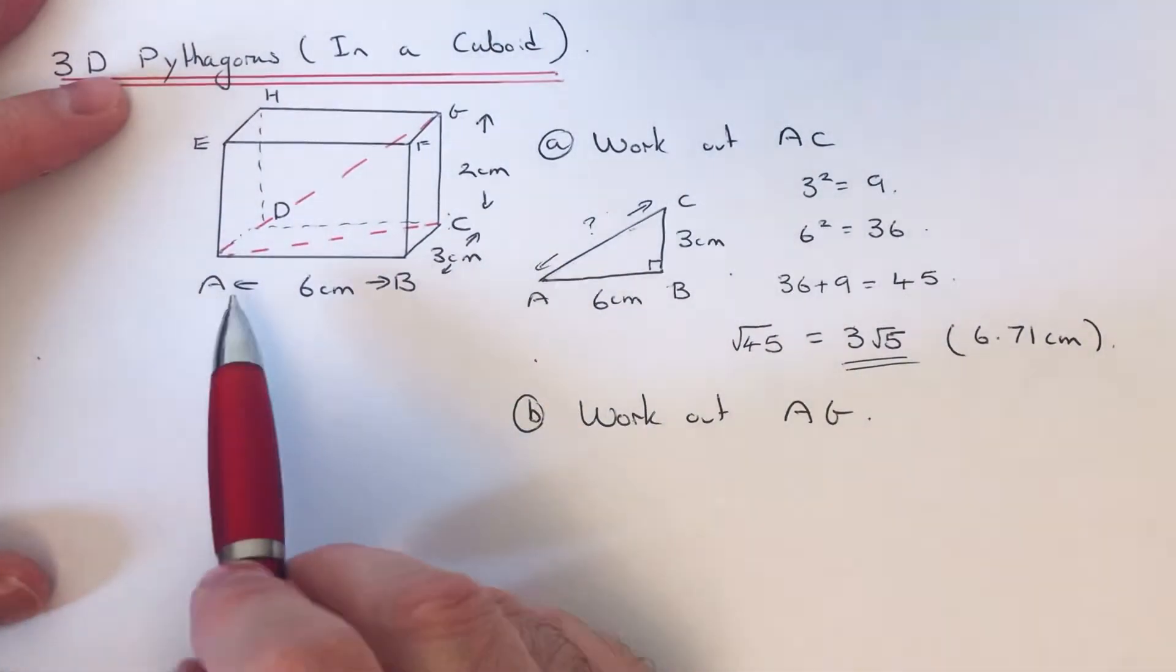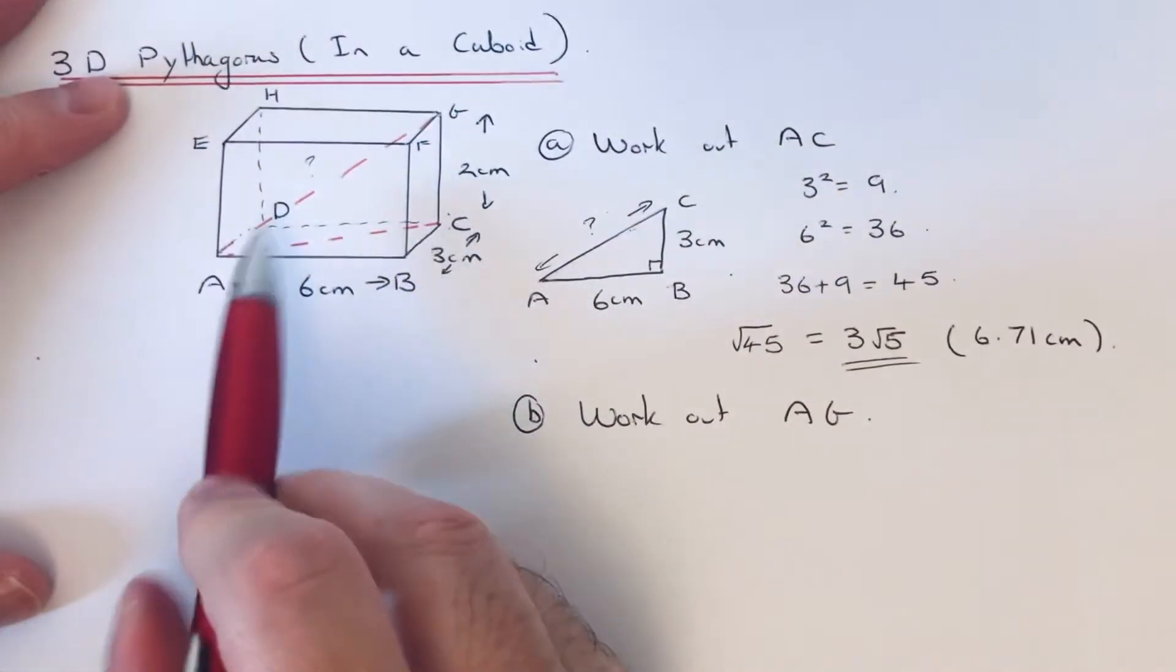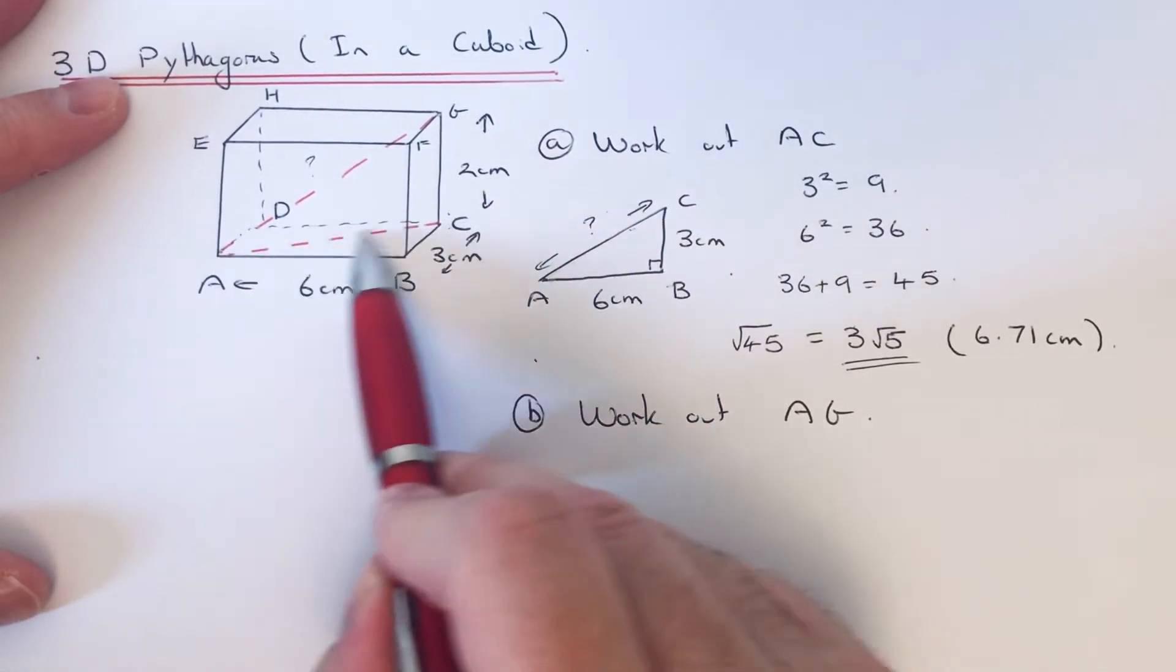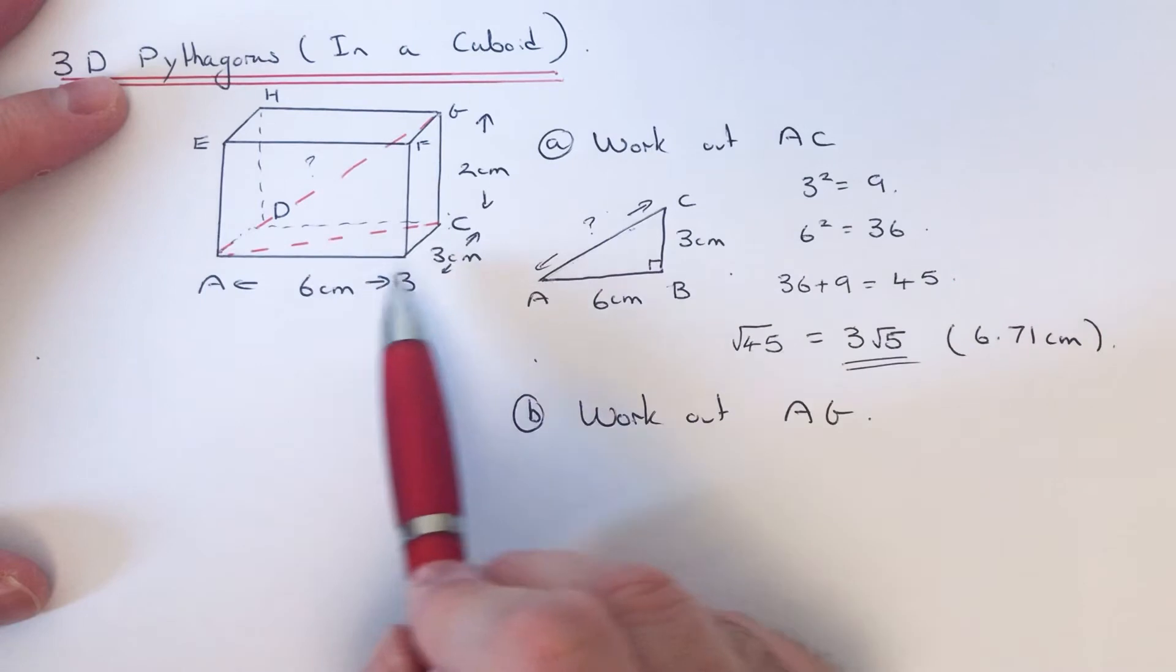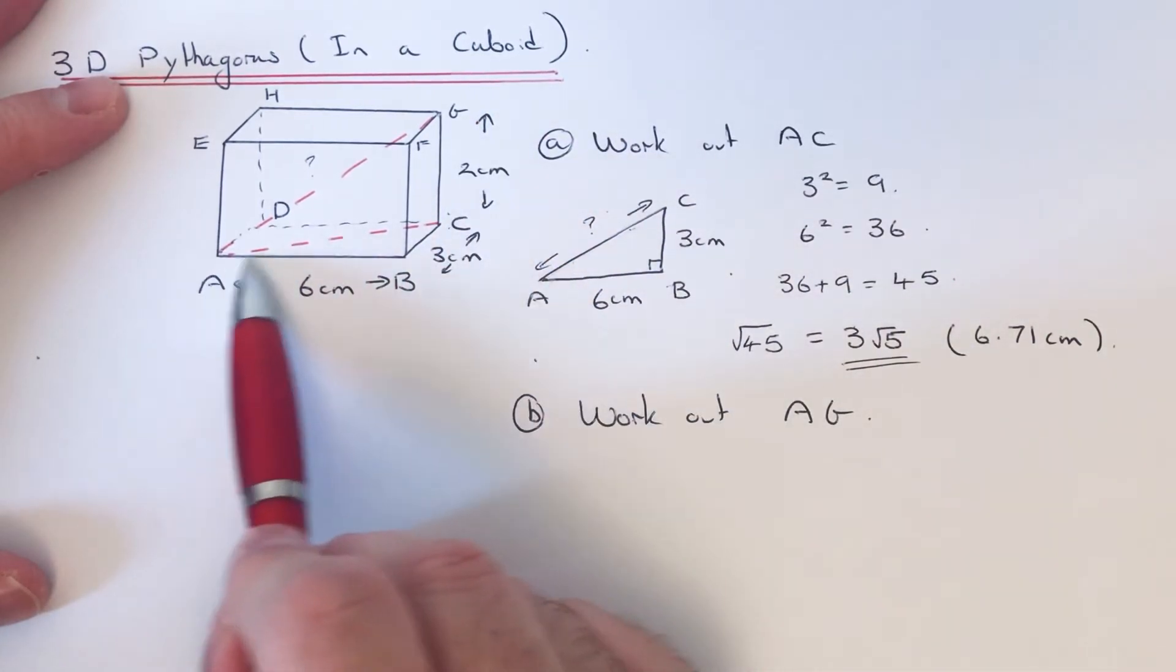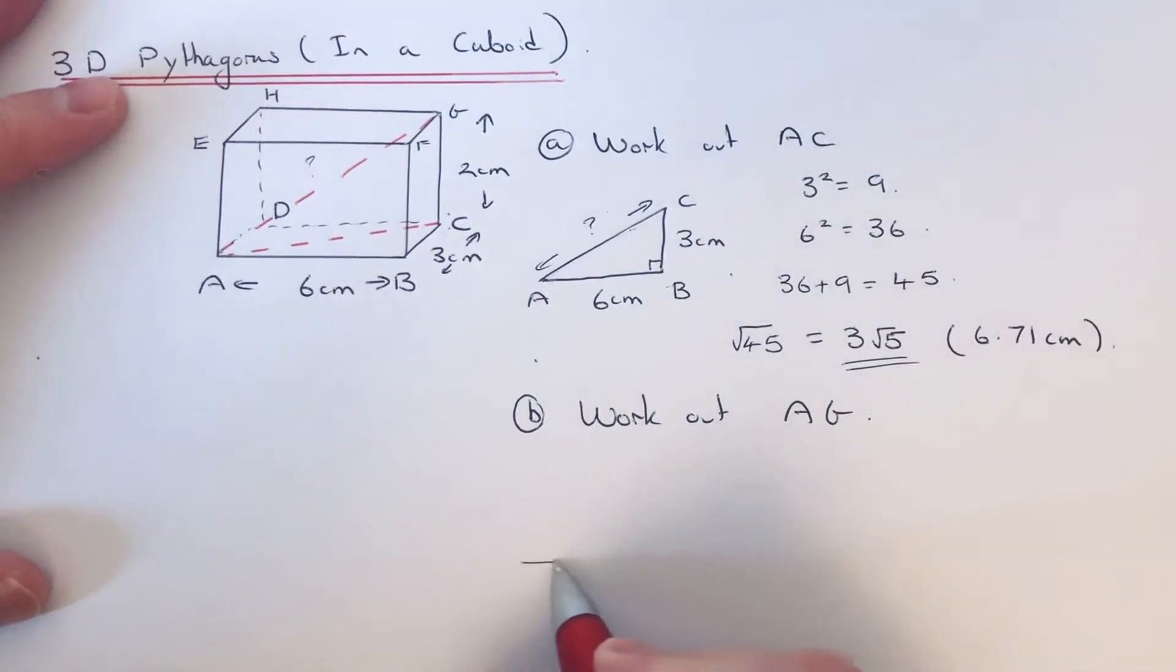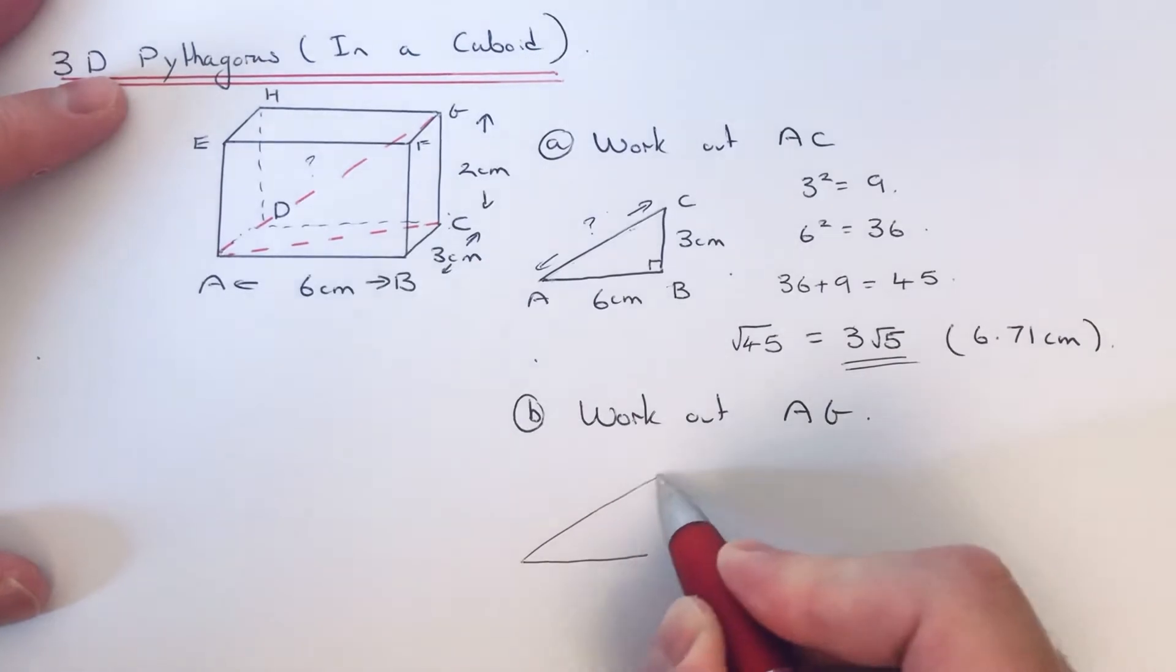The right-angle triangle I'm going to use this time to work out A to G is going to be ACG, so it's that one there. That's because I've got C to G which is 2, and I've just worked out A to C which is 3√5. So I'm just going to draw that triangle out again just to make it clear what we're doing.